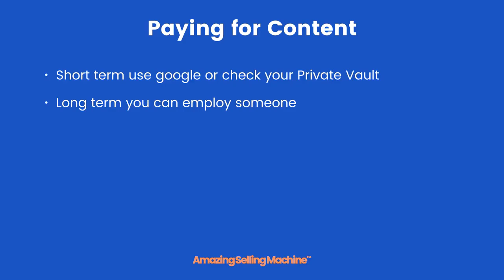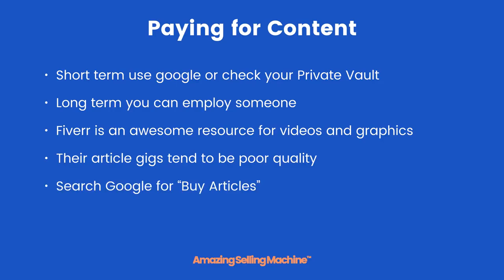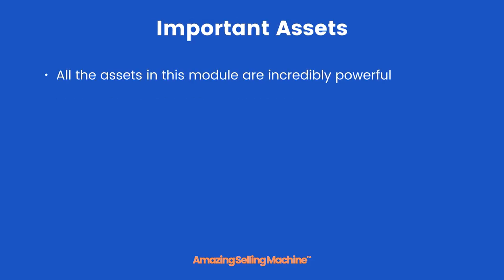Paying for content. In the short term, use Google or check your private vault. Long term, you can employ someone and you will get to that stage eventually. Fiverr is an awesome resource for videos and graphics — you can get really simple quick videos and excellent graphics done really cheaply. However, their article gigs tend to be poor quality, so we don't recommend getting your articles created there. Search Google for 'buy articles' and you'll find loads of resources where you can have someone create an article for you, and most of these are relatively cheap when you consider the cost versus the time it would take you to do it yourself.